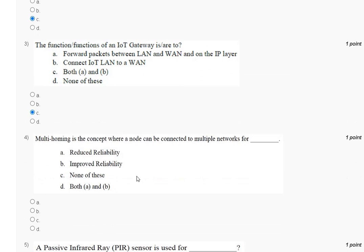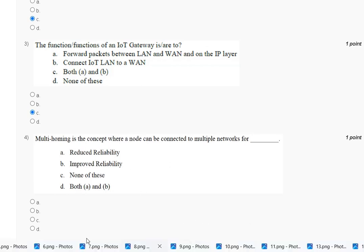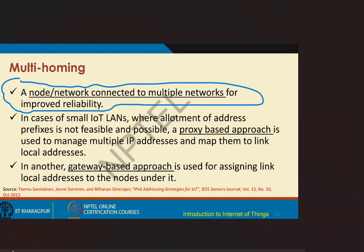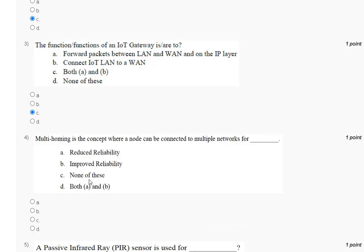Question four: multi-homing is the concept where a node can be connected to multiple networks for which purpose? Options are: first, reduced reliability; second, improved reliability; third, none of these; fourth, both A and B. A node connected to multiple networks provides improved reliability. The correct answer to question four is option B, improved reliability.